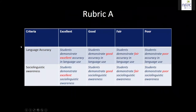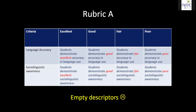First example: this rubric has two criteria — language accuracy and different levels: poor, fair, good, excellent, and so on. Look at the descriptor: 'Students demonstrate excellent accuracy in language use. Good. Fair. Poor.' Why bother providing these descriptors if they just repeat the keywords of the performance level? We call these anti-descriptors, because students would have no idea what excellent, good, fair, or poor actually entails. We do not think these kinds of descriptors assist learning.